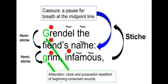Here is one line from Beowulf to illustrate key terms. A stich is a whole line, and a hemistich is a half line. For example, 'Grendel the fiend's name' is one hemistich, and 'grim infamous' is the other half. Each half line has two stressed syllables and a varying number of unstressed syllables. In 'Grendel the fiend's name,' 'Gren' and 'fiend' are stressed, while 'del' and 'name' are unstressed. In 'grim infamous,' 'grim' and 'in' are stressed, while 'famous' is unstressed.